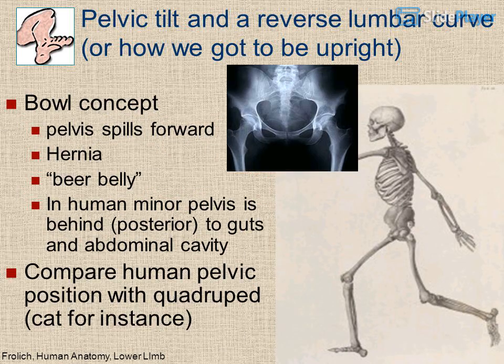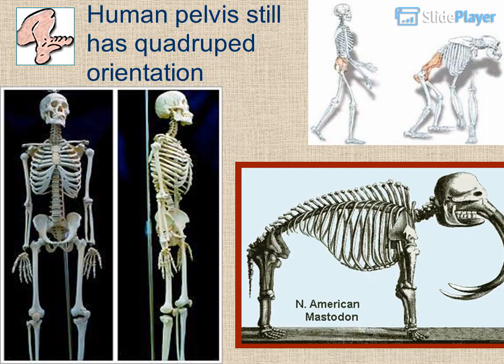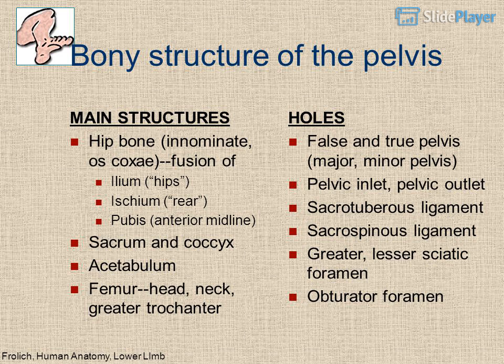Pelvic tilt and lumbar curve explain how humans got to be upright. The pelvis spills forward — hence the belly and hernias. In humans, the minor pelvis is behind, posterior to the guts and abdominal cavity. The human pelvis still retains a quadruped orientation, as seen when compared with a quadruped such as a cat.